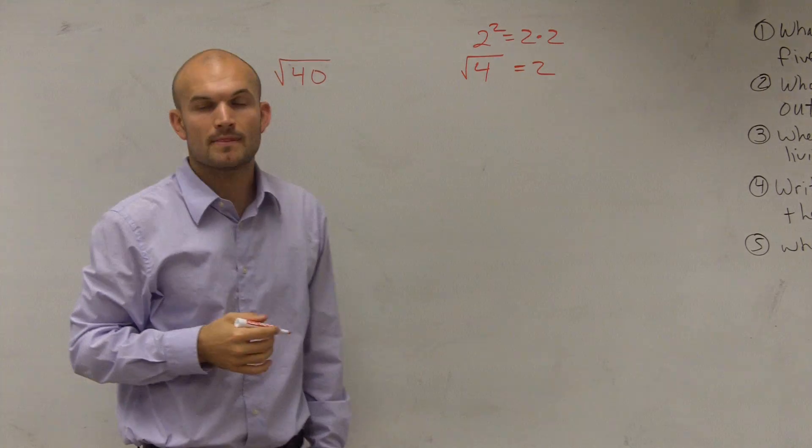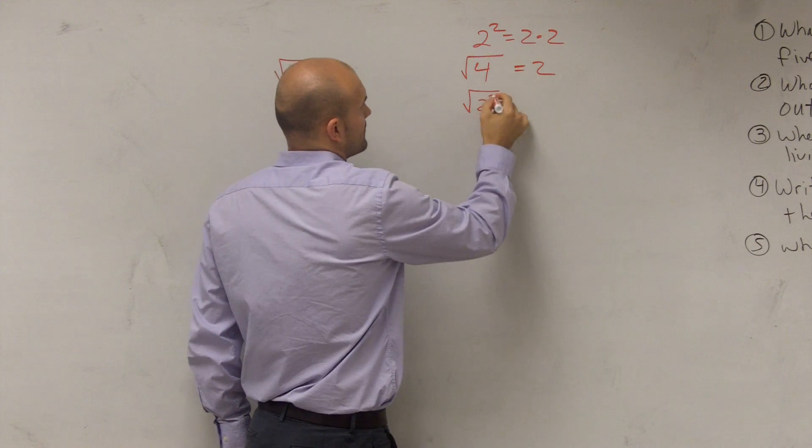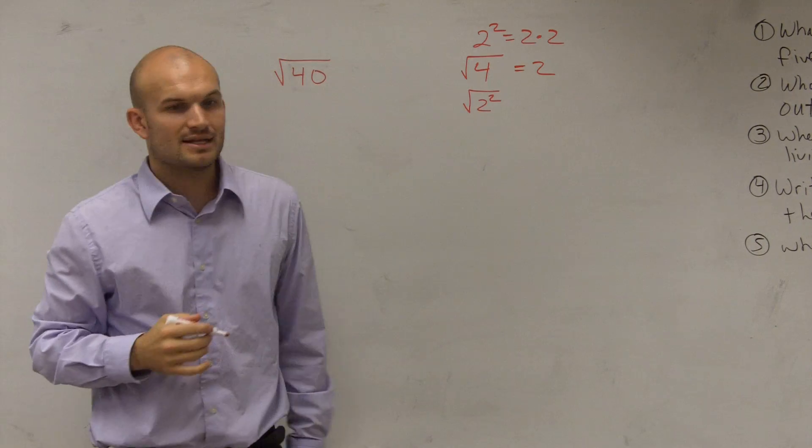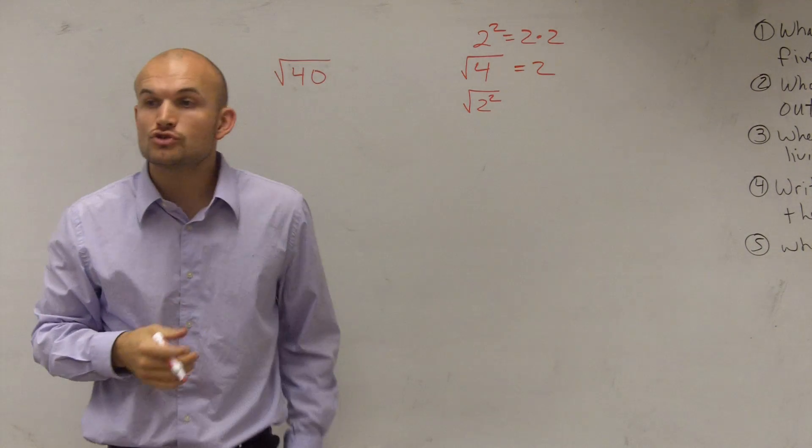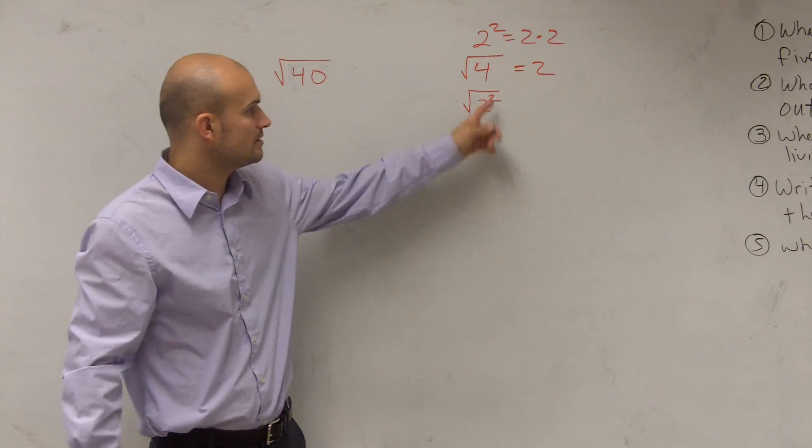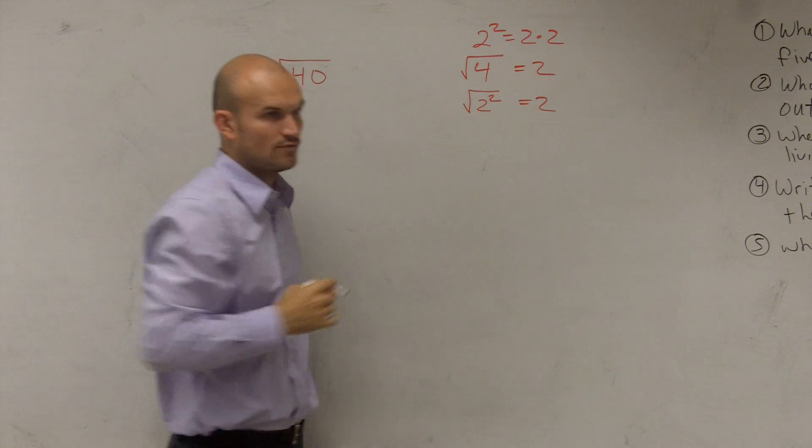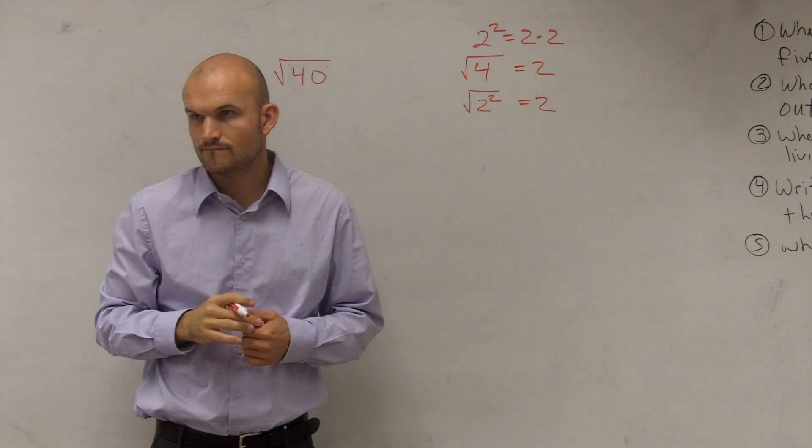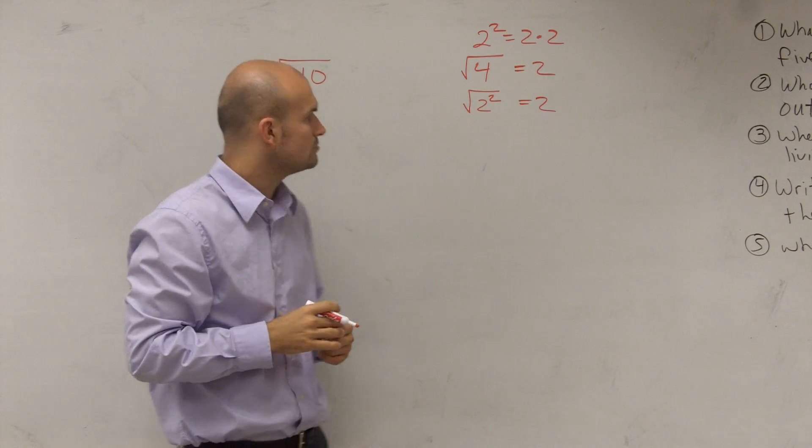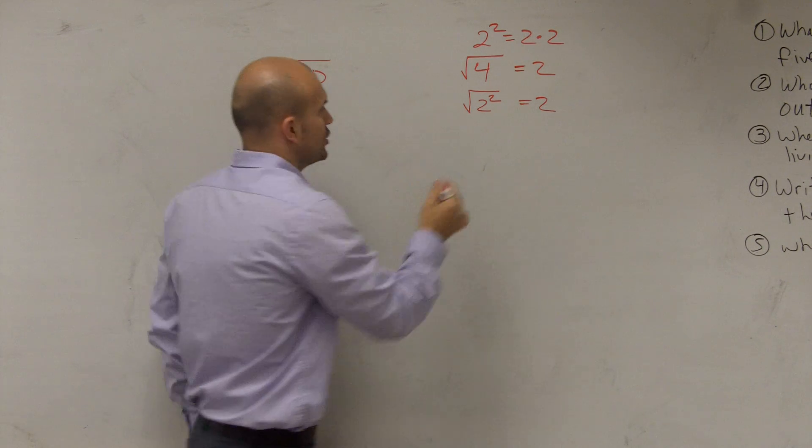Now I'm going to manipulate this a couple different ways and just see if you guys still agree with me. Could we now say that square root of 2 squared is still going to equal 2, because 2 squared equals 4? Would everybody agree with that? Do you agree with that?